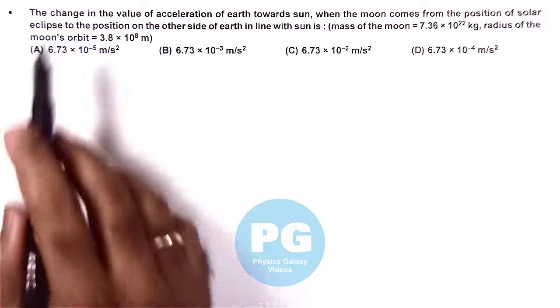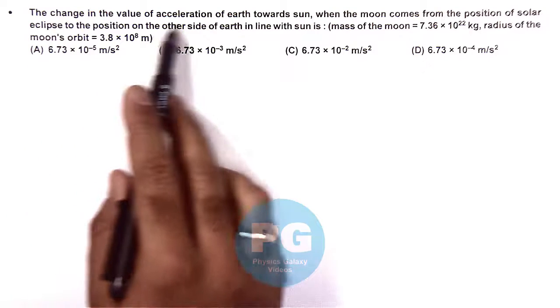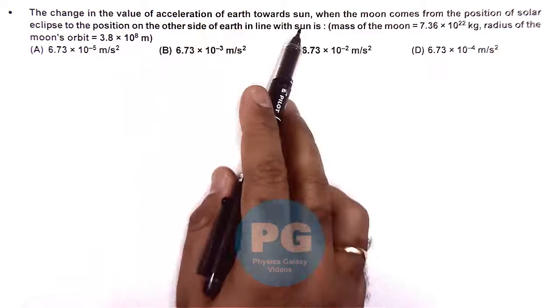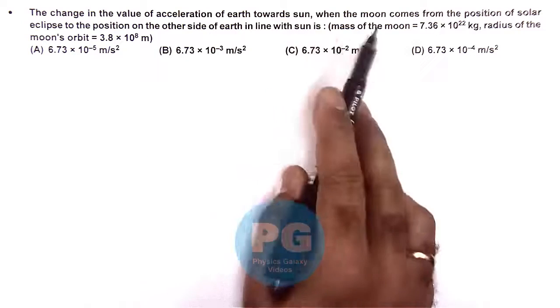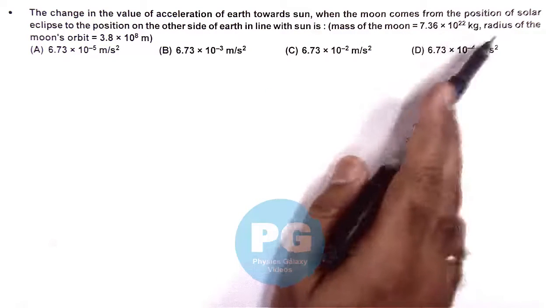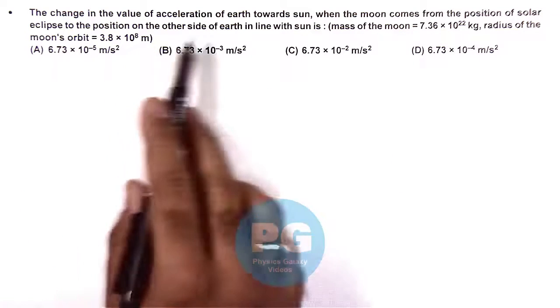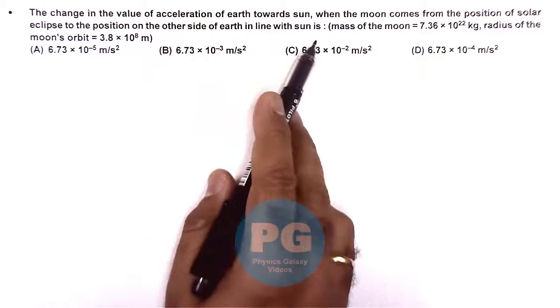In this question, the change in the value of acceleration of earth towards sun when the moon comes from the position of solar eclipse to the position on the other side of earth in line with sun is...